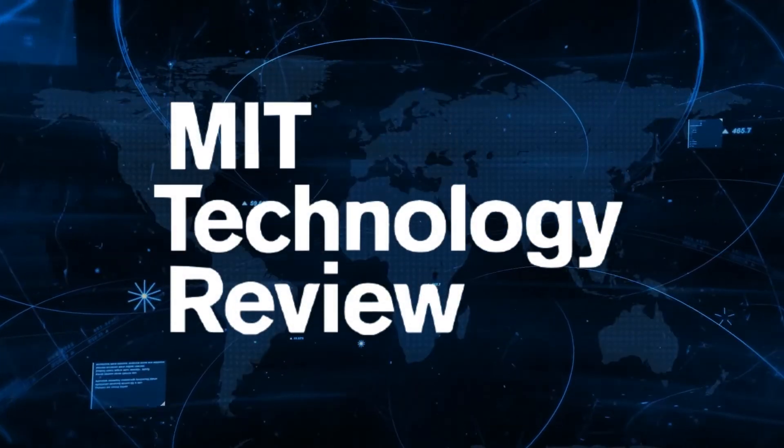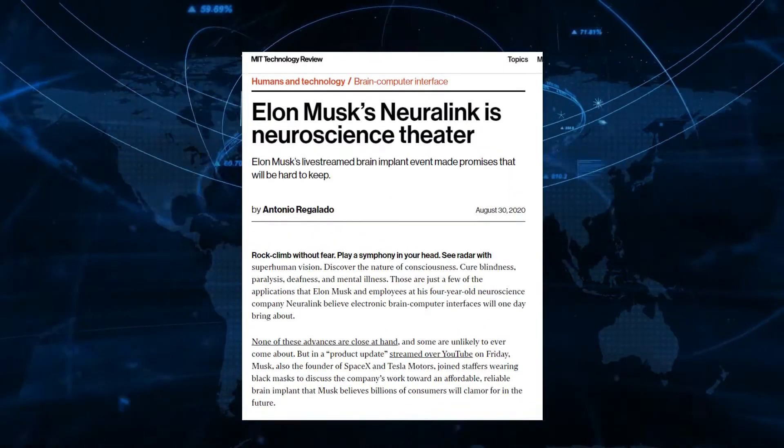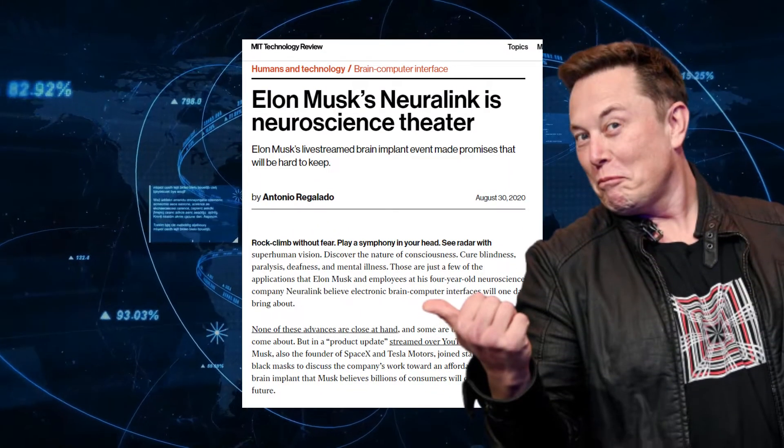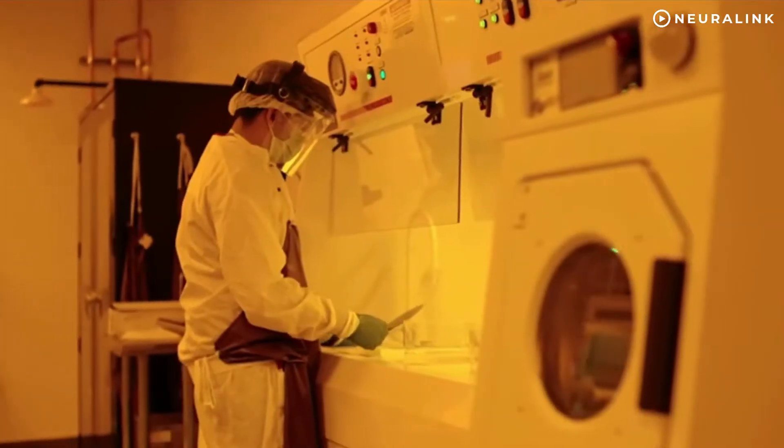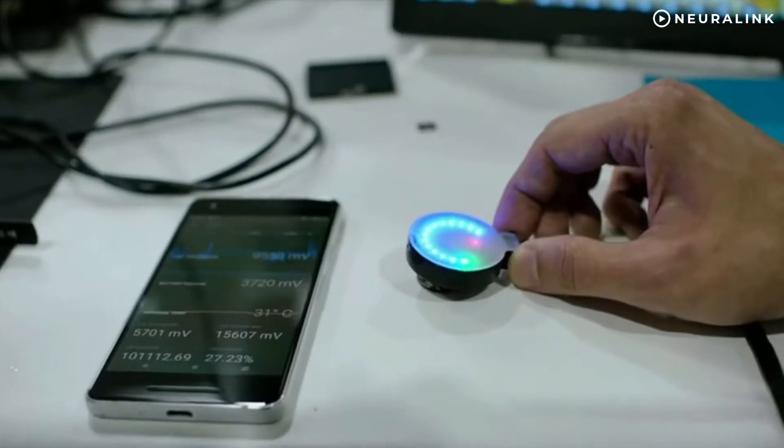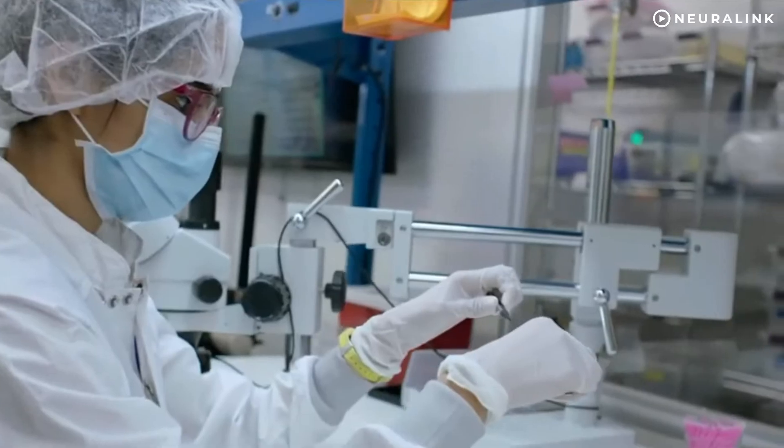Several neuroscientists and publications, including the MIT Technology Review, have criticized some claims made by Musk concerning the technology. In contrast, others have praised the technology as an advancement in neuroscience research. Although Neuralink remained highly secretive about its work, the Neuralink team revealed to the public the technology of the prototype they had been working on.